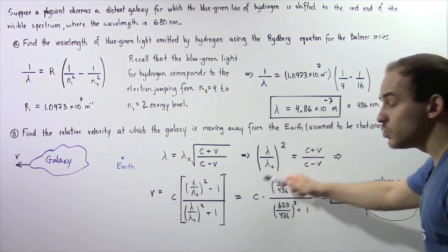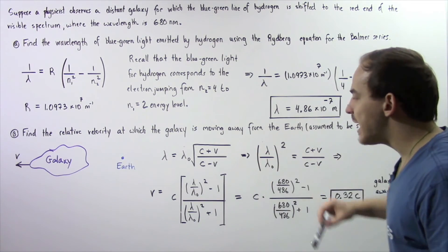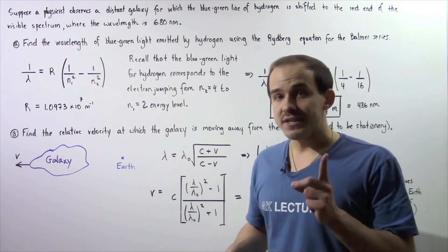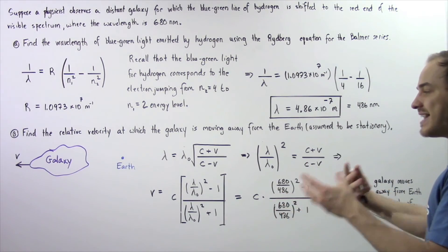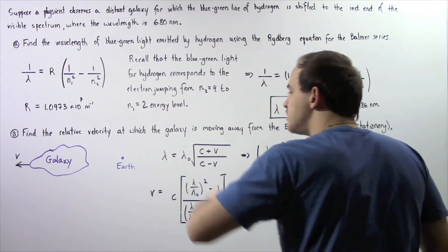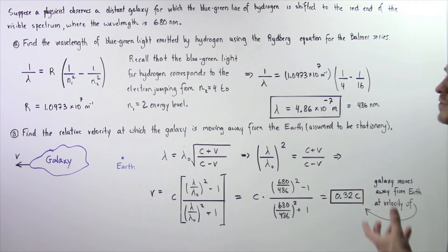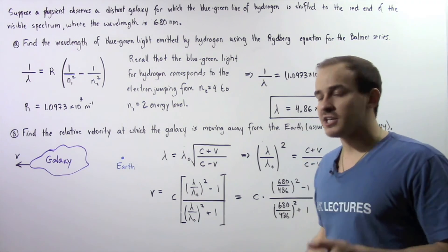This is equal to about 0.32 and we multiply that by C. So we see that our galaxy is essentially receding, is moving away from the stationary Earth at a velocity of 32% of the speed of light in a vacuum.